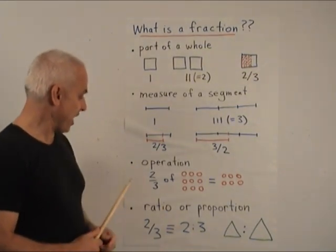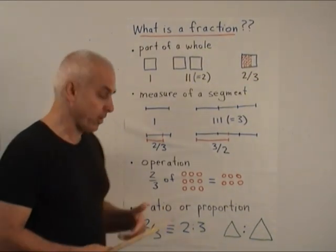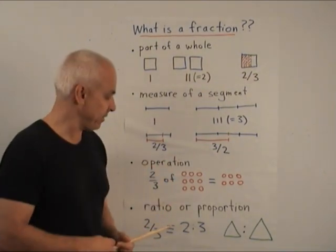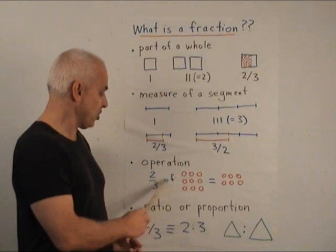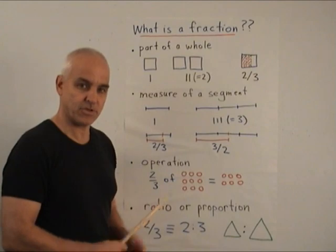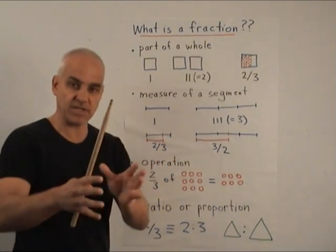Another way of thinking about fractions is as an operation. So we think of 2 thirds as being an operation that allows us to take 2 thirds of something. So here's a collection of things. 2 thirds of this collection is this collection. So it's an operator that acts on something to give you something else.